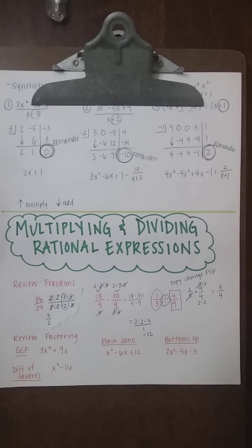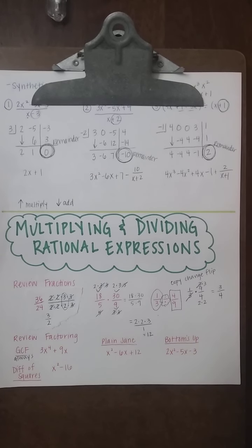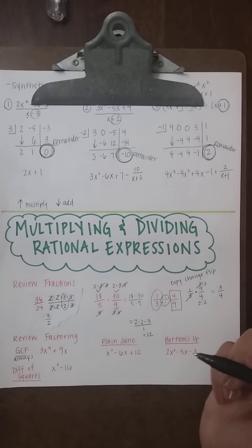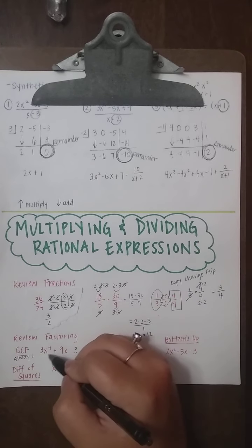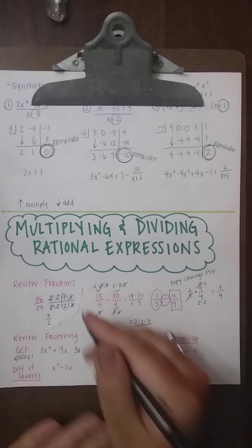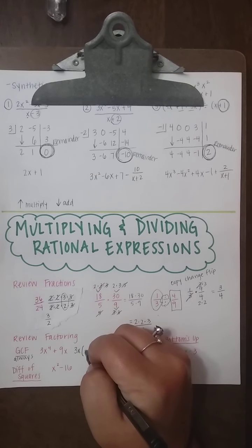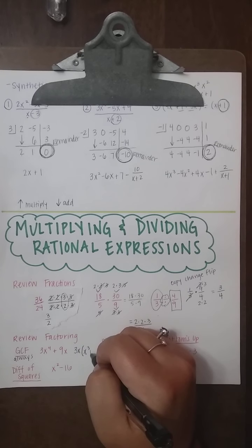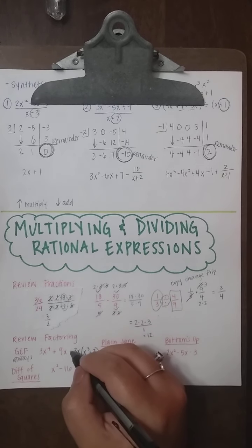We also need to review factoring because we'll be working with expressions that have variables. The first type of factoring you always look for is a GCF — greatest common factor. For 3x⁴ + 9x, the GCF is 3x. Taking out 3x gives us 3x(x³ + 3). Those are equivalent expressions.